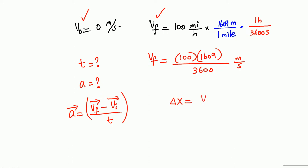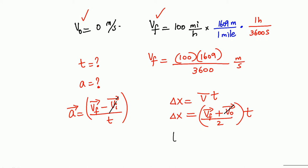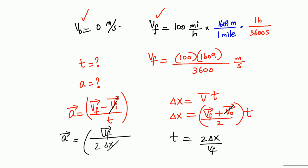Displacement equals average velocity times time, where average velocity is final velocity plus initial velocity divided by 2. Since initial velocity is zero, time equals 2·Δx divided by v_final. Substituting into the acceleration formula gives a equals v_final divided by (2·Δx / v_final), which simplifies to a equals v_final squared over 2·Δx.